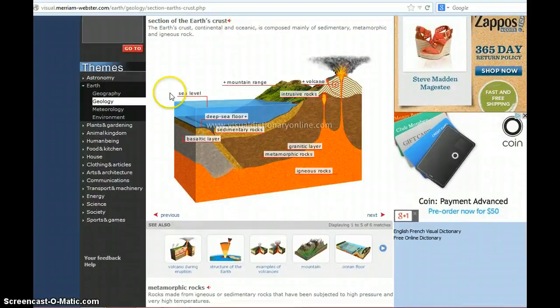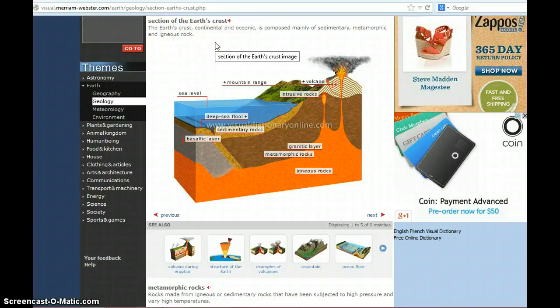This is a visual of a section of Earth's crust, both continental and oceanic. It says that the Earth's crust is composed mainly of sedimentary, metamorphic, and igneous rock.